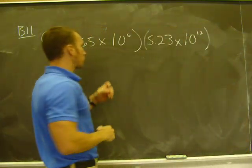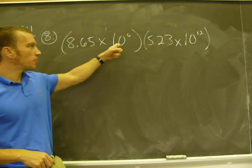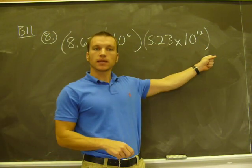So the way we're going to handle that is we're going to multiply these two numbers first and then we're going to multiply our powers of 10. That's the easiest way to handle this.